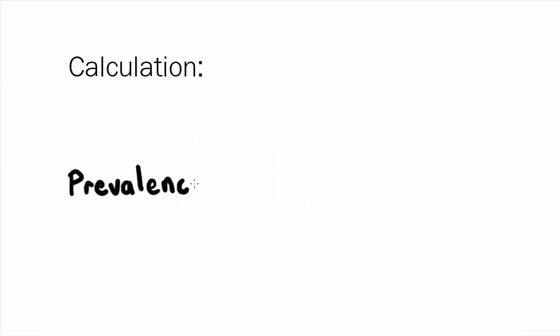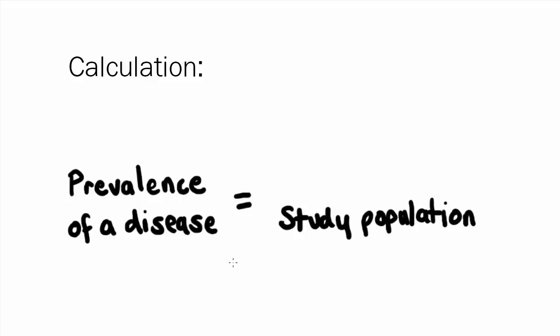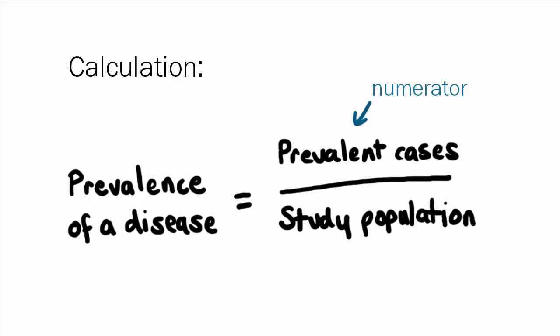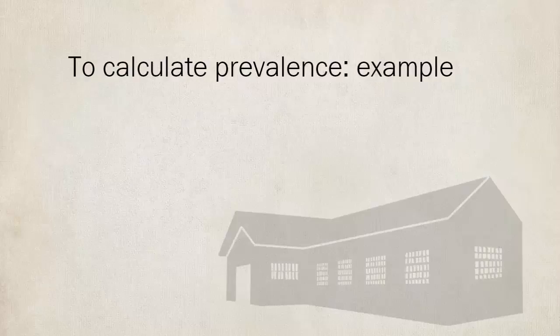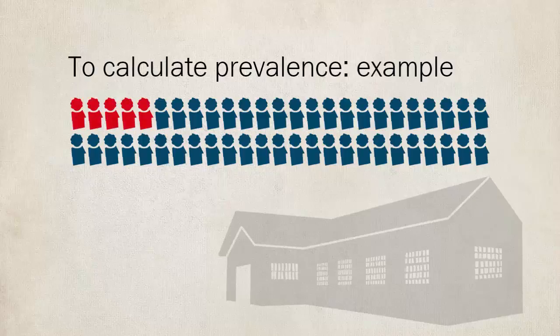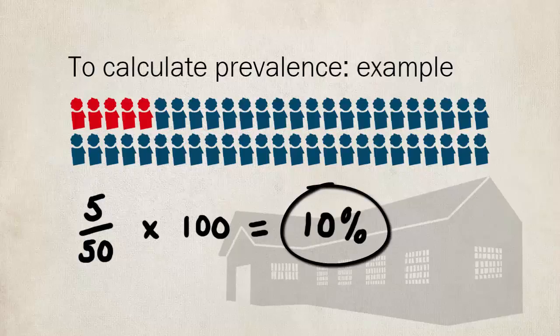To calculate the prevalence of a disease we need to know two numbers: firstly, the study population — the total number of people in the population we are studying — and the number of prevalent cases, that is the number of people with the disease at a specific time. To calculate prevalence, we divide the prevalent cases by the study population, then multiply by 100 to get a percentage. For example, consider a school with 50 children, of whom 5 pupils wear spectacles. We divide 5 by 50 and multiply by 100, giving us a prevalence of 10% for spectacle-wearing children at this school.